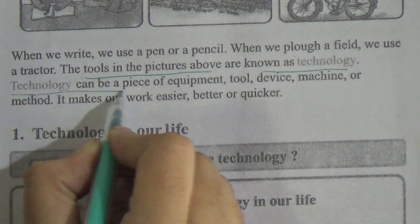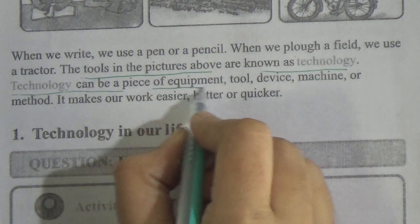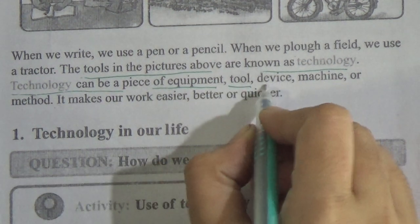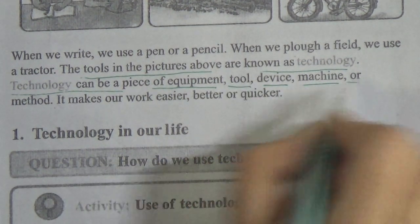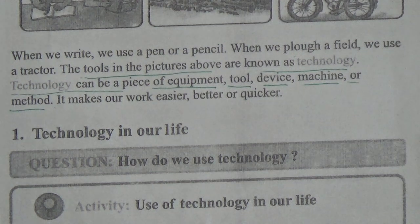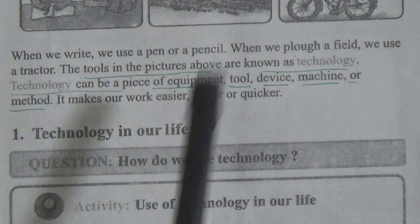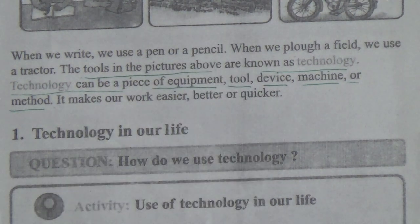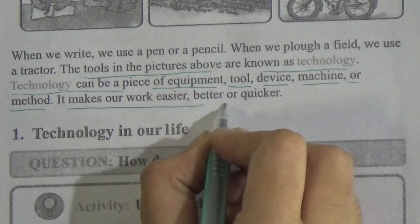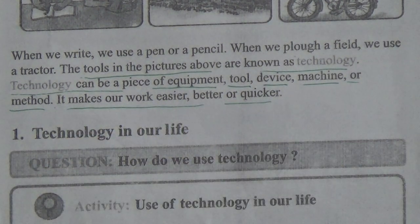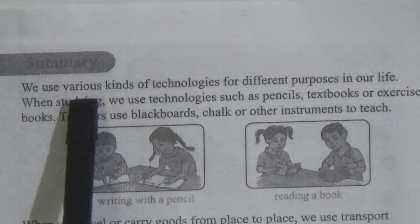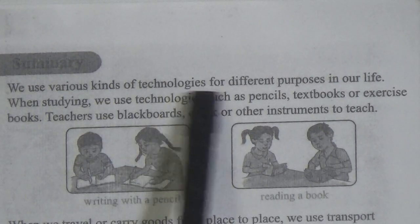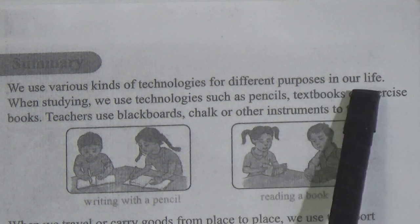Technology can be a piece of equipment, tool, device, machine or method. It makes our world easier, better and quicker. Now students, come to page number 64. We use various kinds of technologies for different purposes in our life.